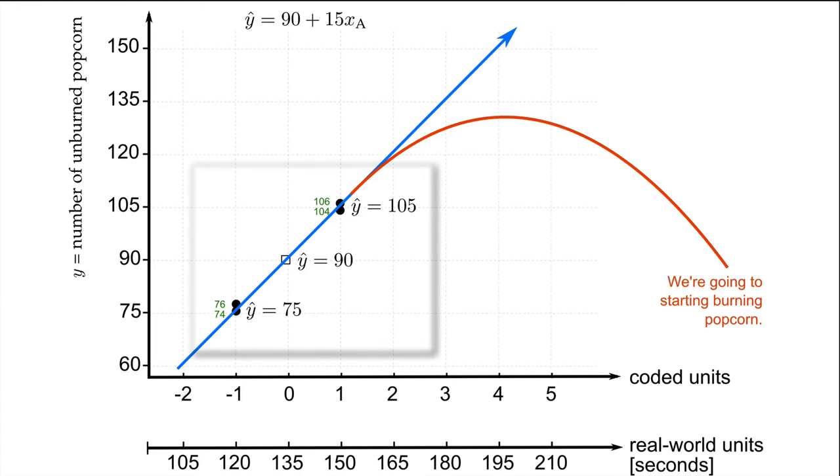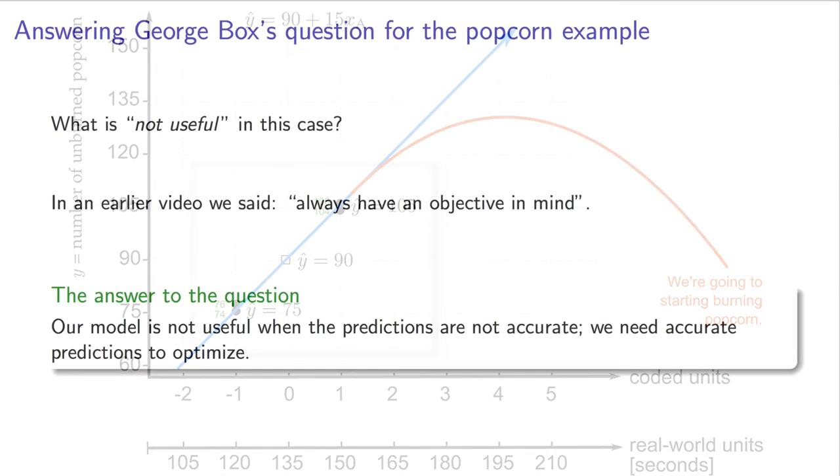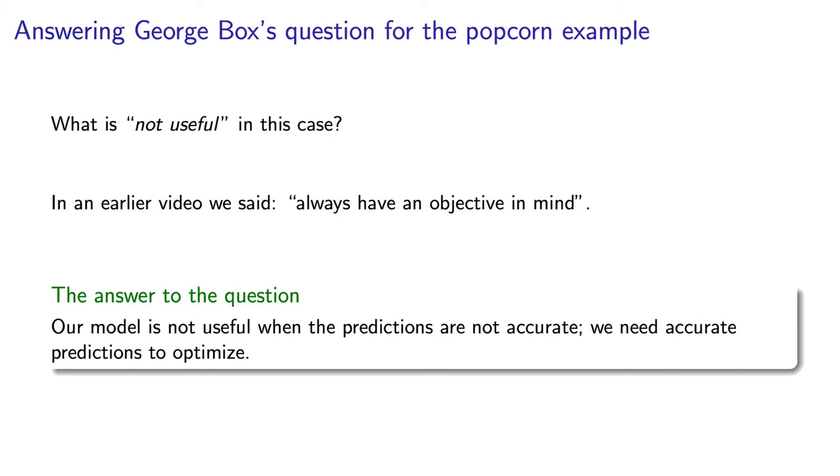But back over here, in this region on the left, the model is perfectly valid. This is a great illustration of the famous quote by George Box, who I've now mentioned several times in the course videos. He said, all models are wrong, but some are useful. He also extended that by asking, the practical question is, how wrong do they have to be before they are not useful? I paraphrase that last piece, and that is exactly what we're dealing with here in the video.